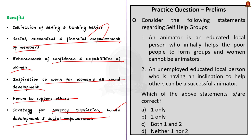In this news article discussion, we saw in detail about self-help groups — informal groups of people who come together to address their common problems. There is an animator to guide the leader and group members. Benefits include inculcating saving and banking habits, empowering members financially, economically and socially, enhancing the confidence and capabilities of women, inspiring women to take part in social responsibilities, and being an effective strategy for poverty alleviation. With these learned points, let us move on to the next news article discussion.